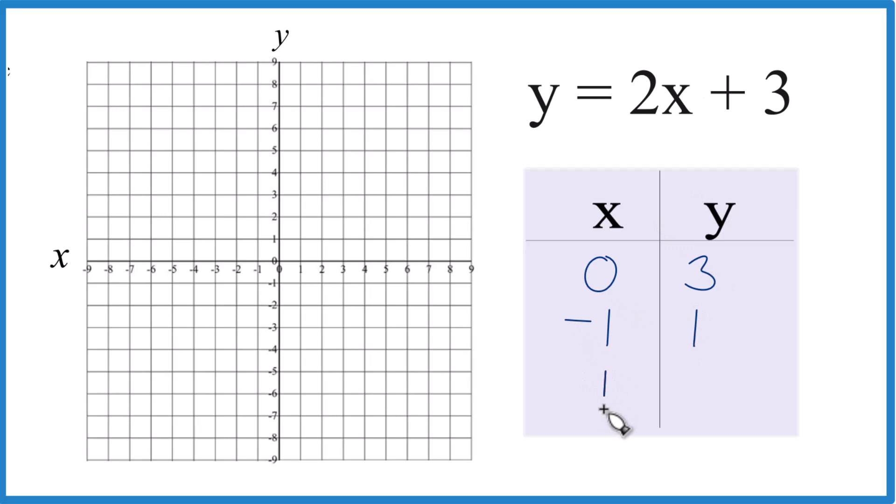Let's do positive 1. 2 times 1, that's 2, plus 3, that gives us 5. So these are the points we're going to graph for this equation, y equals 2x plus 3.